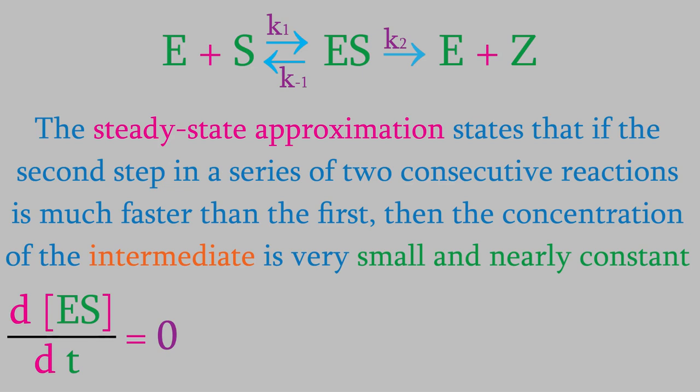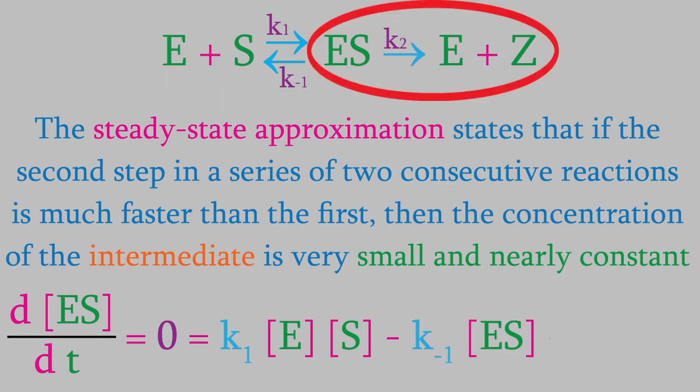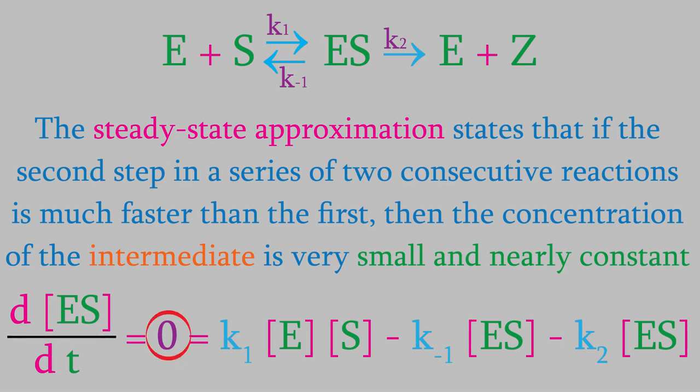Let's write out the rate law with respect to ES. From video 4, you hopefully remember that the rate law includes a term for each reaction that ES is involved in. So, for the forward reaction over here, we have the term K1 times the concentration of E and S. The reverse reaction causes the concentration of the intermediate to decrease, so that term will be negative K minus 1 times the concentration of ES. And the last reaction will give us the term minus K2 times the concentration of ES. As I mentioned a minute ago, this will all be equal to zero because of the steady-state approximation.